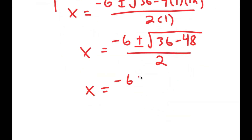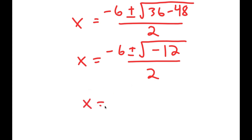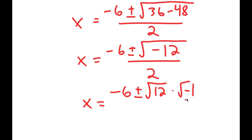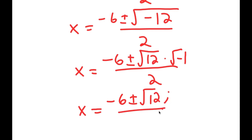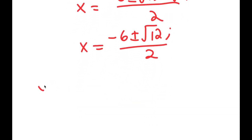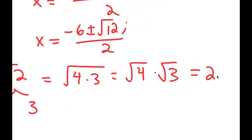This equals negative 6 plus or minus the square root of 36 minus 48, which is negative 12, over 2. From here, I get negative 6 plus or minus the square root of 12 times the square root of negative 1. The square root of negative 1 is the imaginary number i. The square root of 12 is the square root of 4 times 3, which equals 2 root 3.